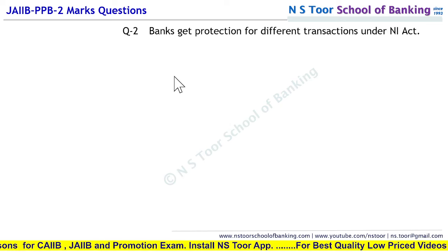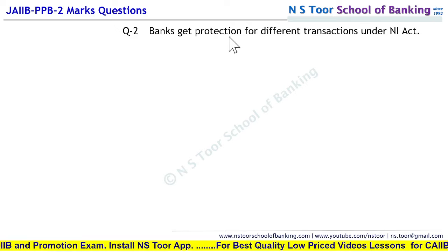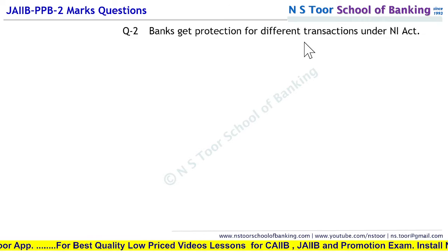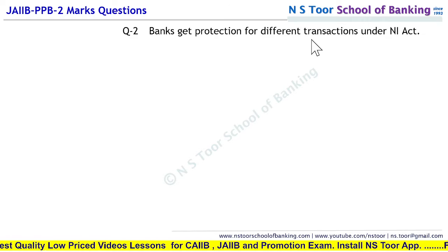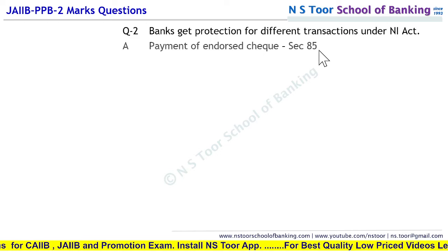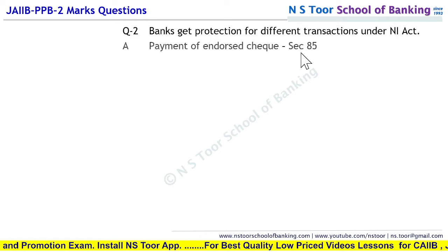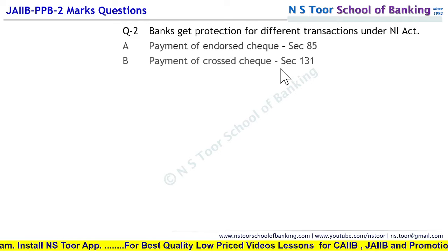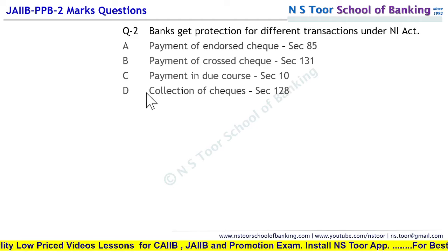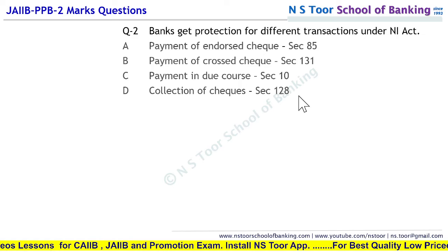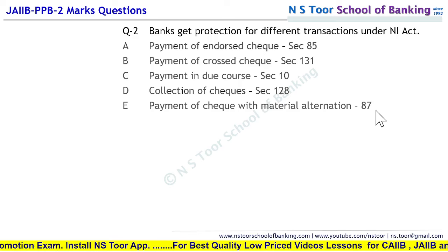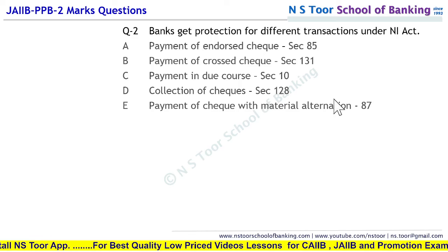Let us now go to question number 2. Banks get protection for different transactions under the Negotiable Instruments Act. NI Act ke andar bankon ko different transactions ke liye protection available hota hai. Payment of endorsed cheque — Section 85 protection provide karta hai. Payment of crossed cheque — Section 131. Payment in due course — Section 10. Collection of cheque — Section 128. Payment of cheque with material alteration — Section 87. Ye 5 different statements humare samne aa gayi hain.